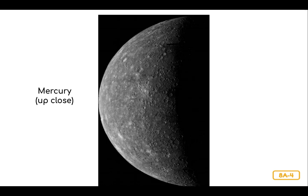Mercury has no atmosphere to protect it like Earth does, and because it is so close to the Sun, the surface of Mercury is very very hot or very very cold. Temperatures on the surface facing the Sun can range anywhere from 300 degrees to nearly 1,400 degrees Fahrenheit — on Earth we consider 90 degrees Fahrenheit to be hot. While the surface facing away from the Sun can be as low as 350 degrees below zero. 32 degrees Fahrenheit is the temperature at which water freezes on Earth.